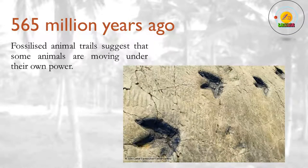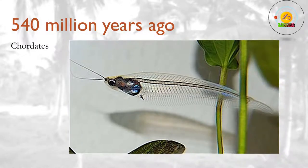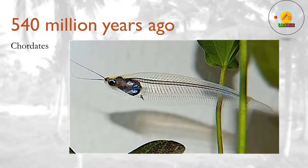565 million years ago? Fossilized animal trails suggest that some animals are moving under their own power. 540 million years ago? As the first chordates — animals that have a backbone, or at least a primitive version of it — emerge among the deuterostomes, a surprising cousin branches off. The sea squirts, or tunicates, begin their history as tadpole-like chordates, but metamorphose partway through their lives into bottom-dwelling filter feeders. Their larvae still look like tadpoles today, revealing their close relationship to backboned animals.